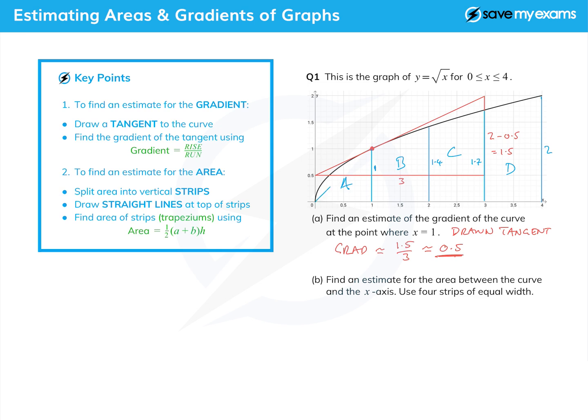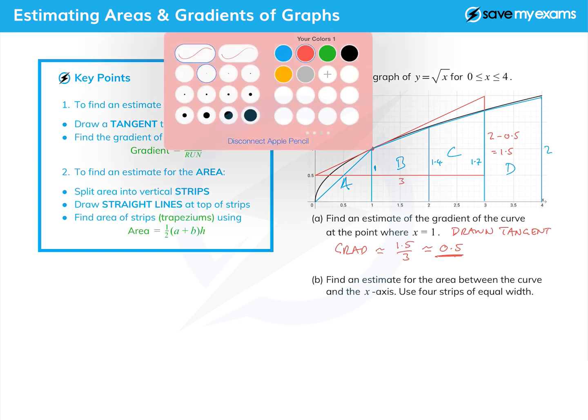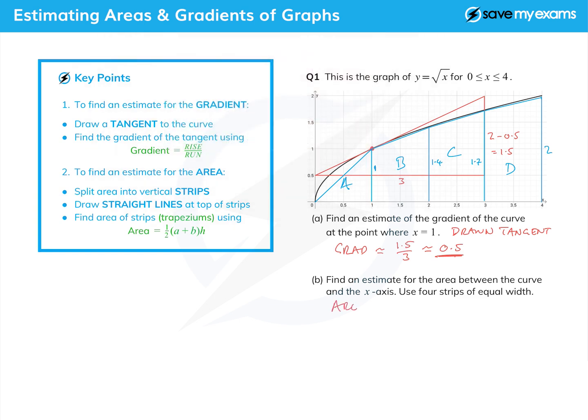And then we join the points, the top of these things, with straight lines. So we are essentially approximating the curve by a series of straight lines. We can see actually as we get up here that those straight lines are a pretty good approximation.